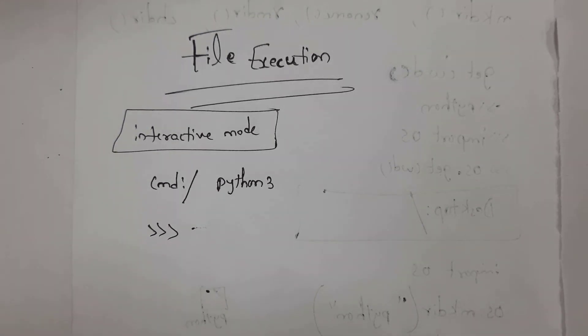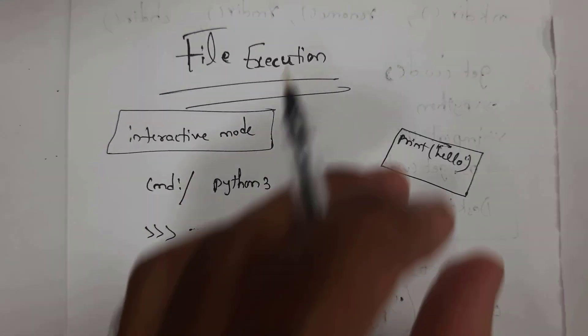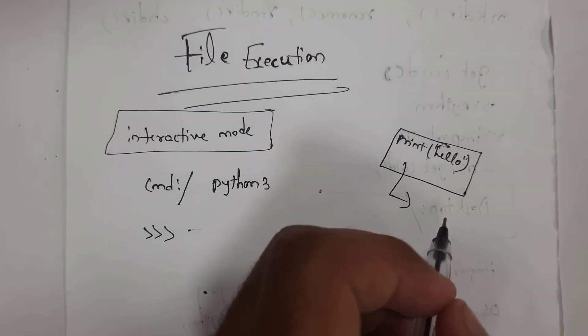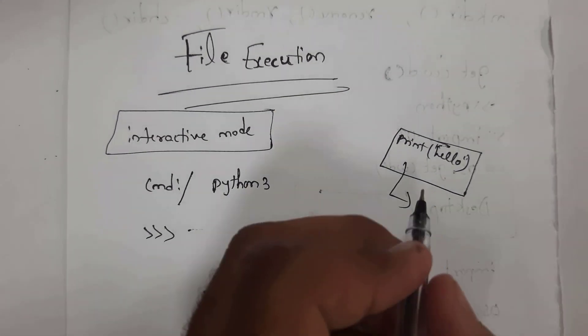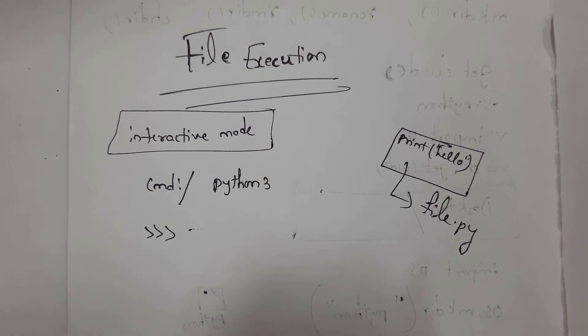The second way is by writing a Python script. For example, I open Notepad and write print hello. Now you need to save this file with a .py extension. I've given this Python file the name file.py.